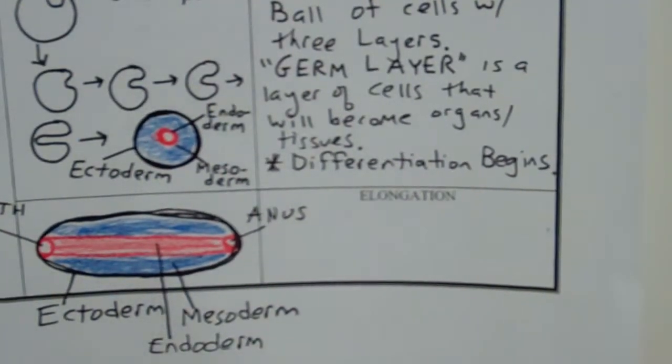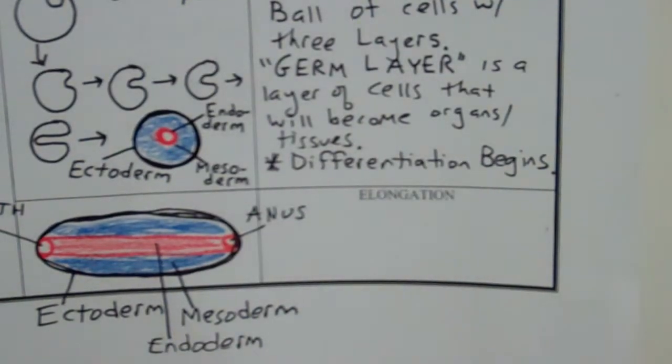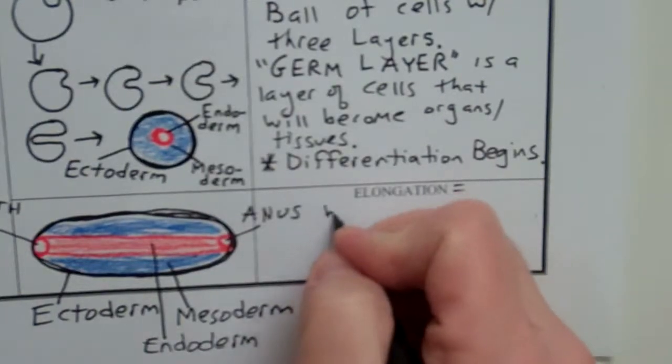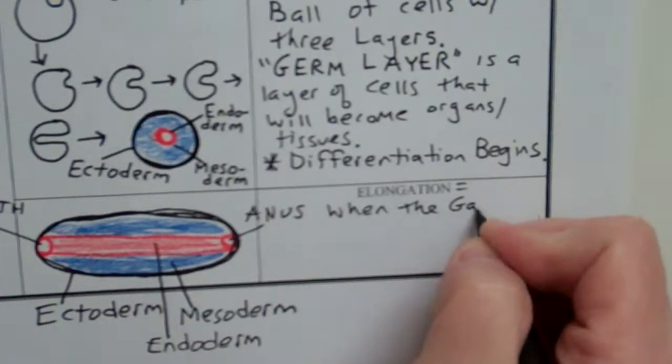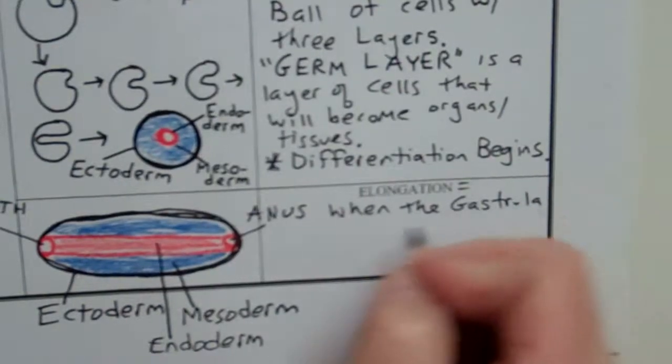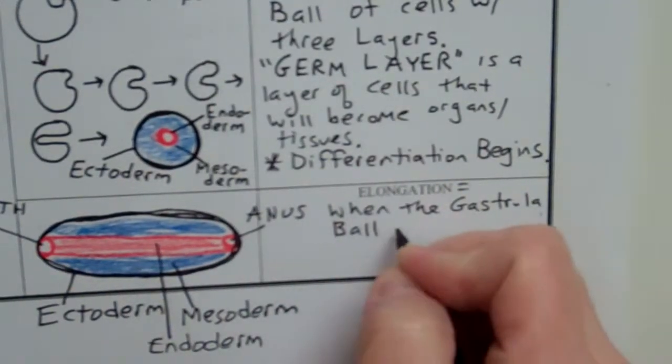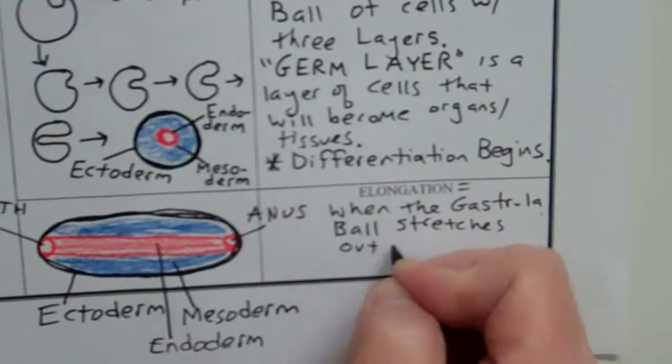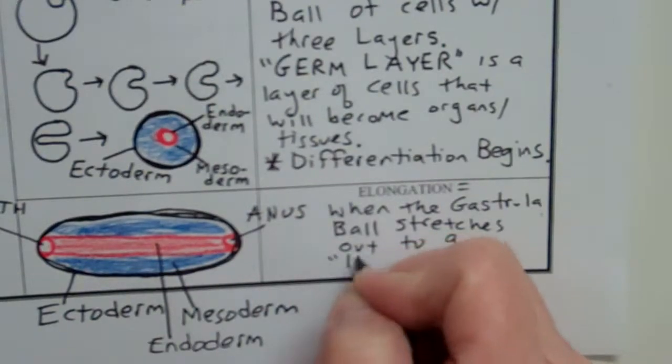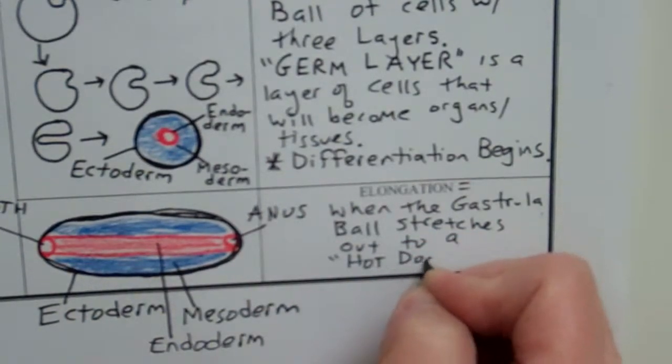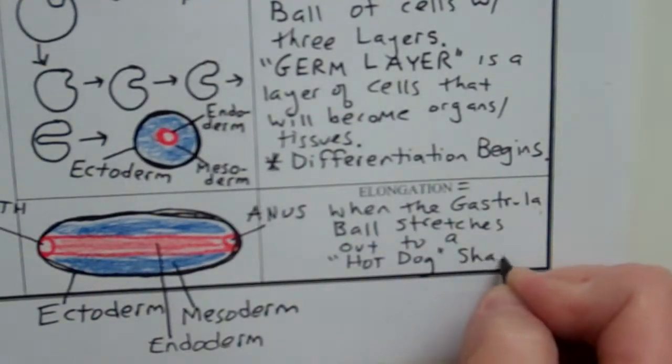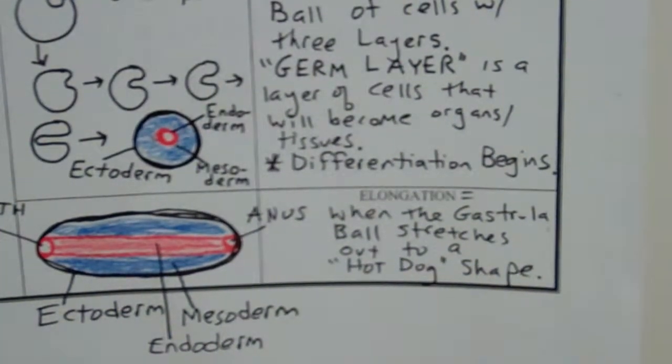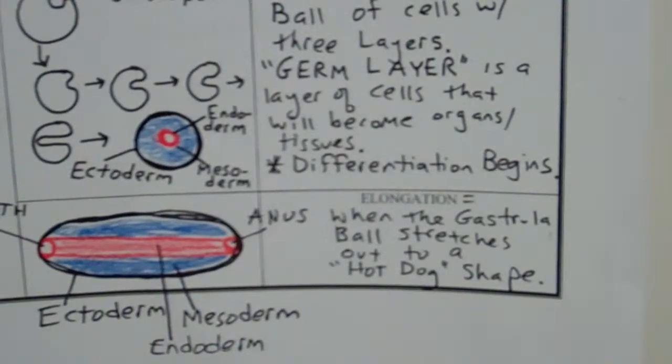Now elongation, just to put it quite simple, keep it very, very simple, is when the gastrula ball, when the gastrula ball of cells stretches out to a hot dog shape. Very technical, huh? Pretty fun. So that's the beginning. We're going to pause and do the back side in just a minute.